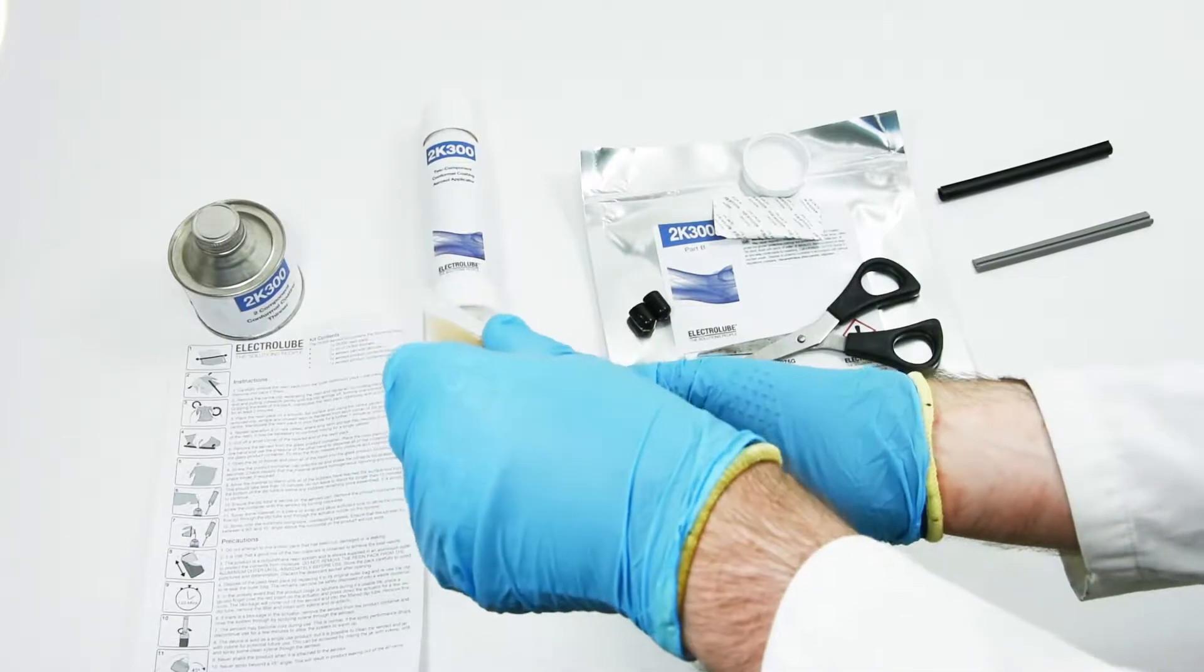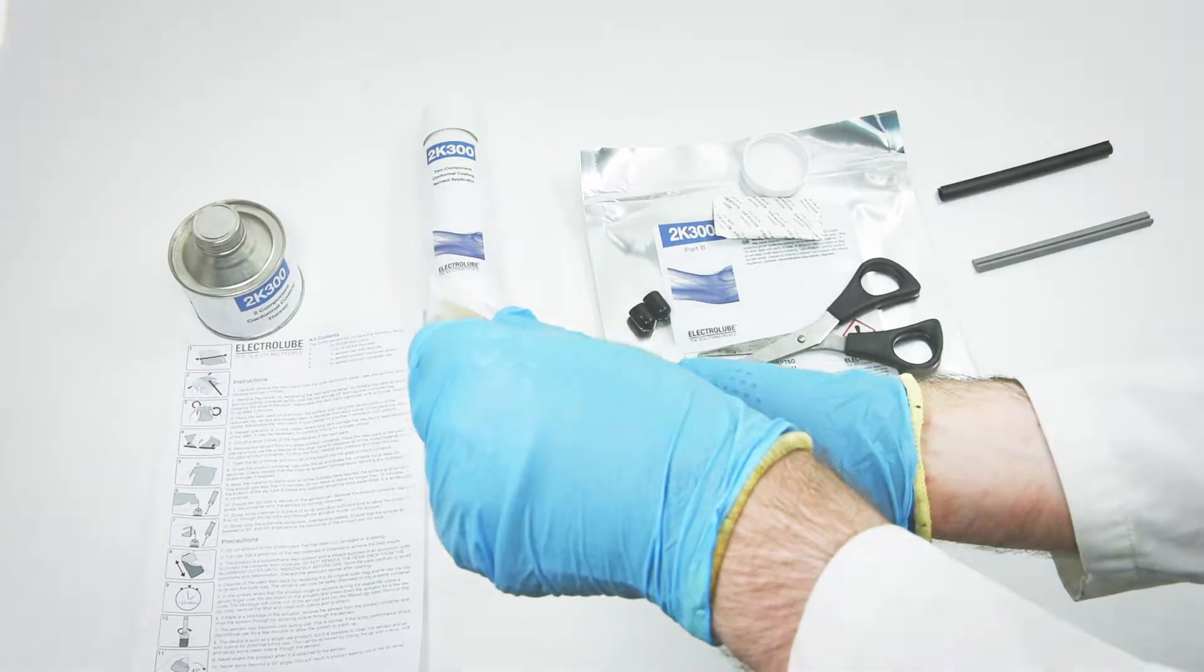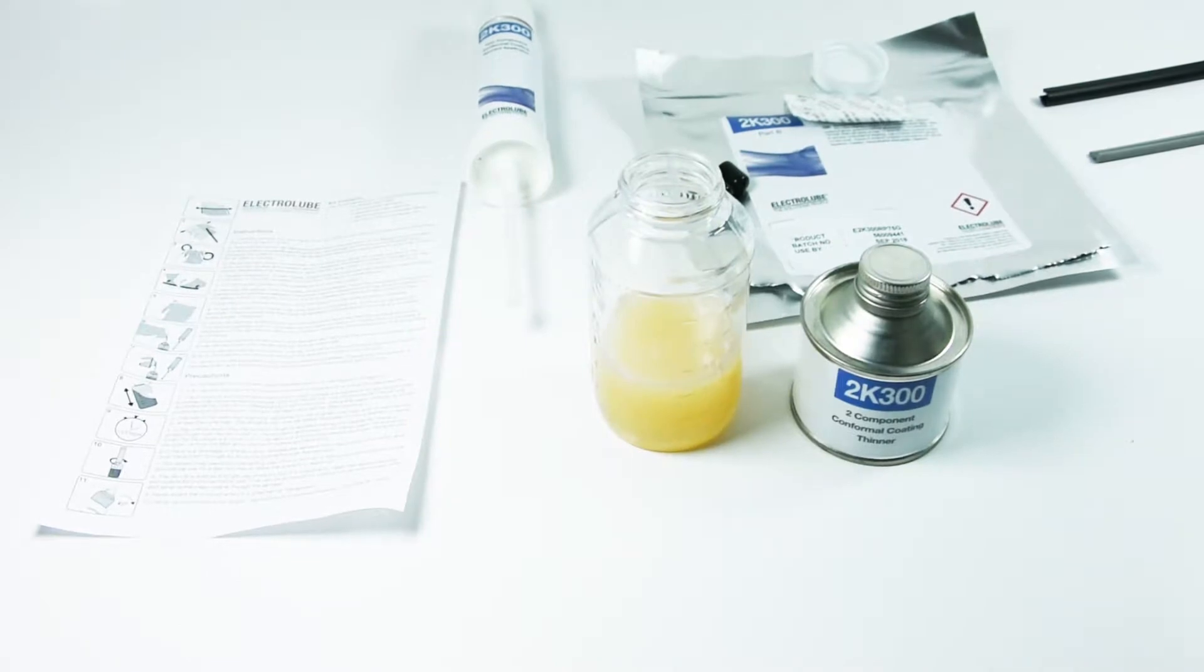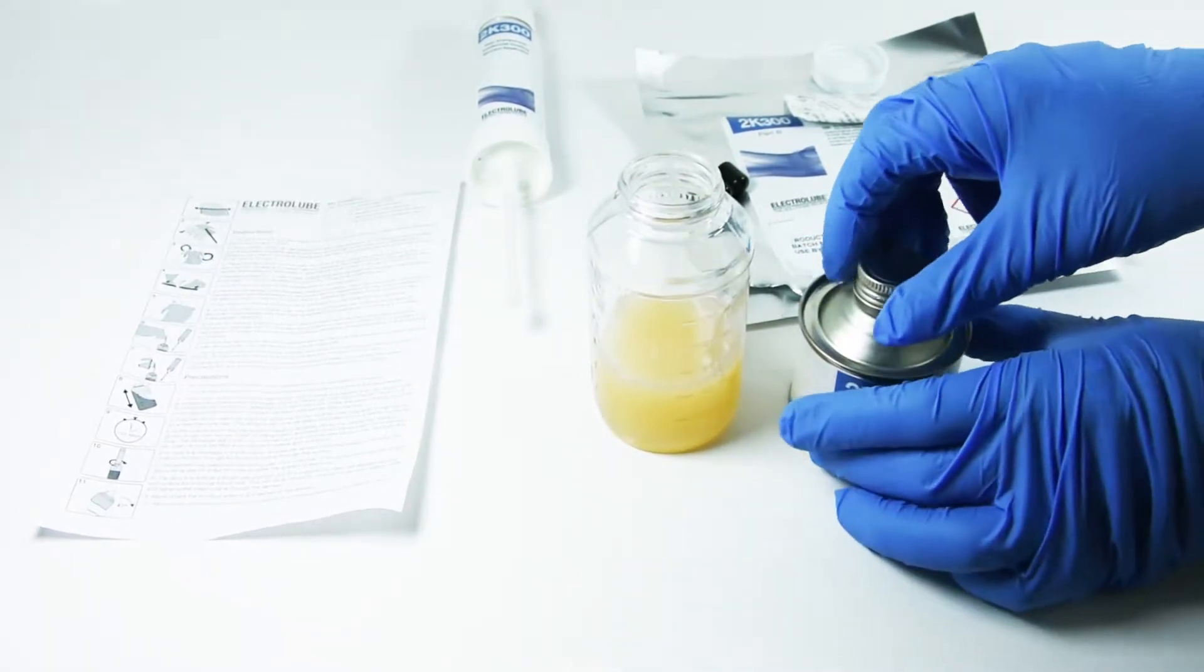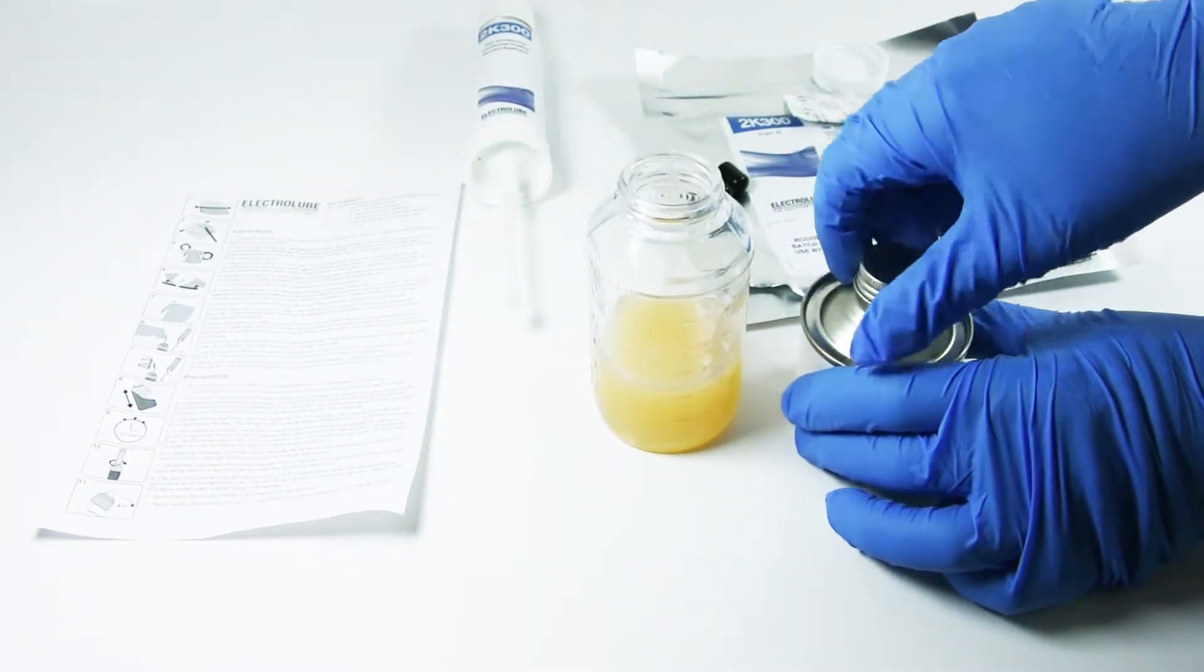To stop the flow, release any pressure and invert the bag. Open the jar of thinner and pour all of the liquid into the glass product container.